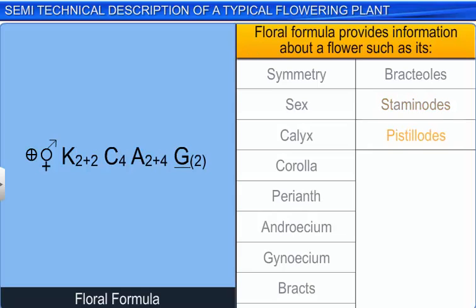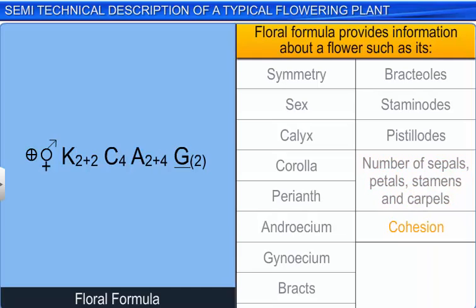The formula also indicates the number of sepals, petals, stamens, and carpels. The formula explains cohesion and adhesion within parts of whorls and in between the whorls, with the help of symbols.